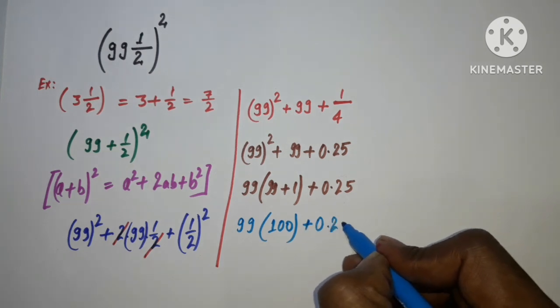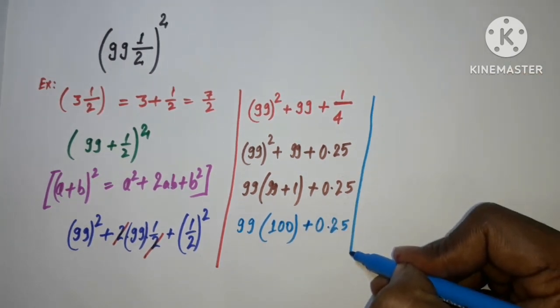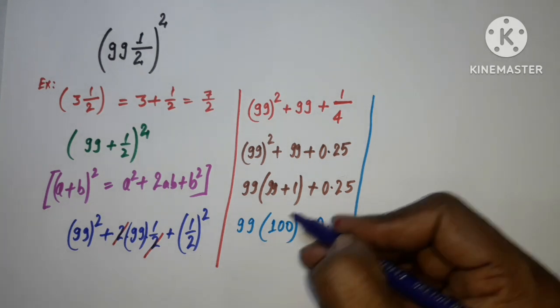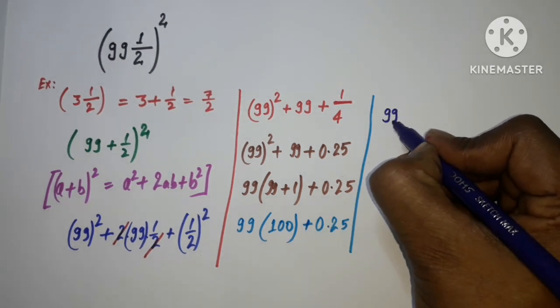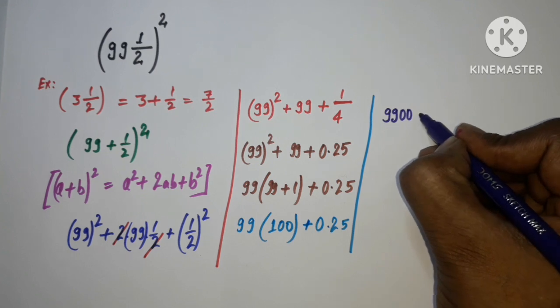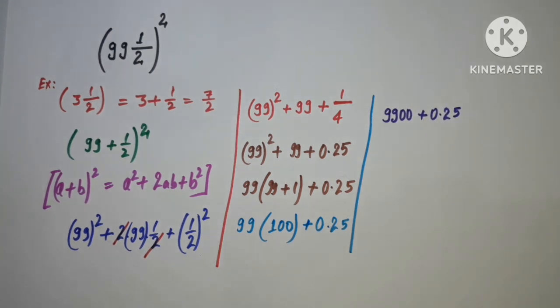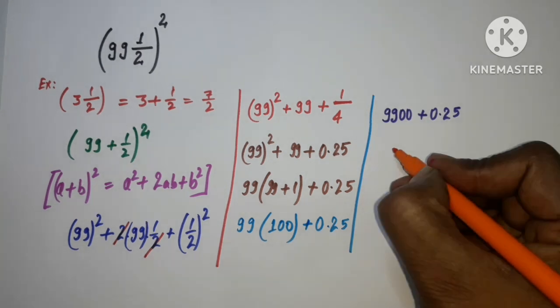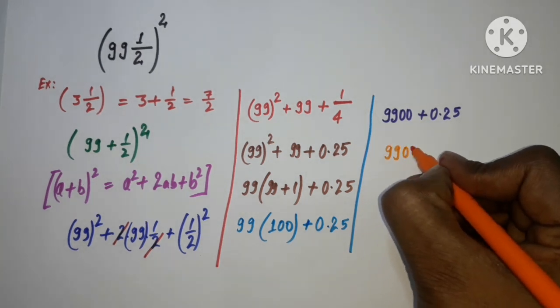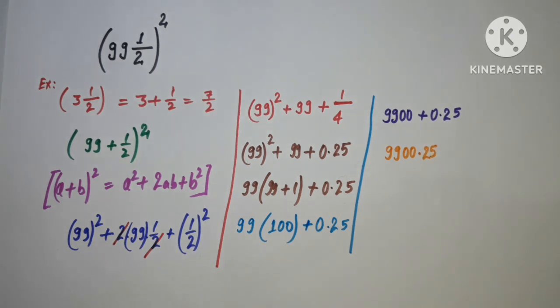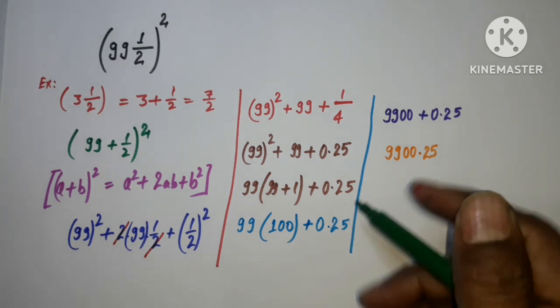100 can be easily multiplied with 99. We are very close to the answer. 99 into 100 is 9900, and adding 0.25 gives us 9900.25. This is our final answer.